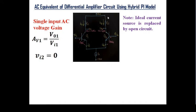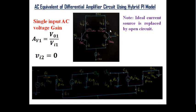The ideal current source is replaced by an open circuit and VCC is grounded for AC analysis. Drawing the hybrid pi equivalent model: for transistor Q1, the input resistance ri1 equals beta times re, and the controlled current source is beta times ib. RC is connected to the output node V_out1. For transistor Q2, similarly ri2 and beta2*ib2 are present, with the input grounded for the single-ended case.